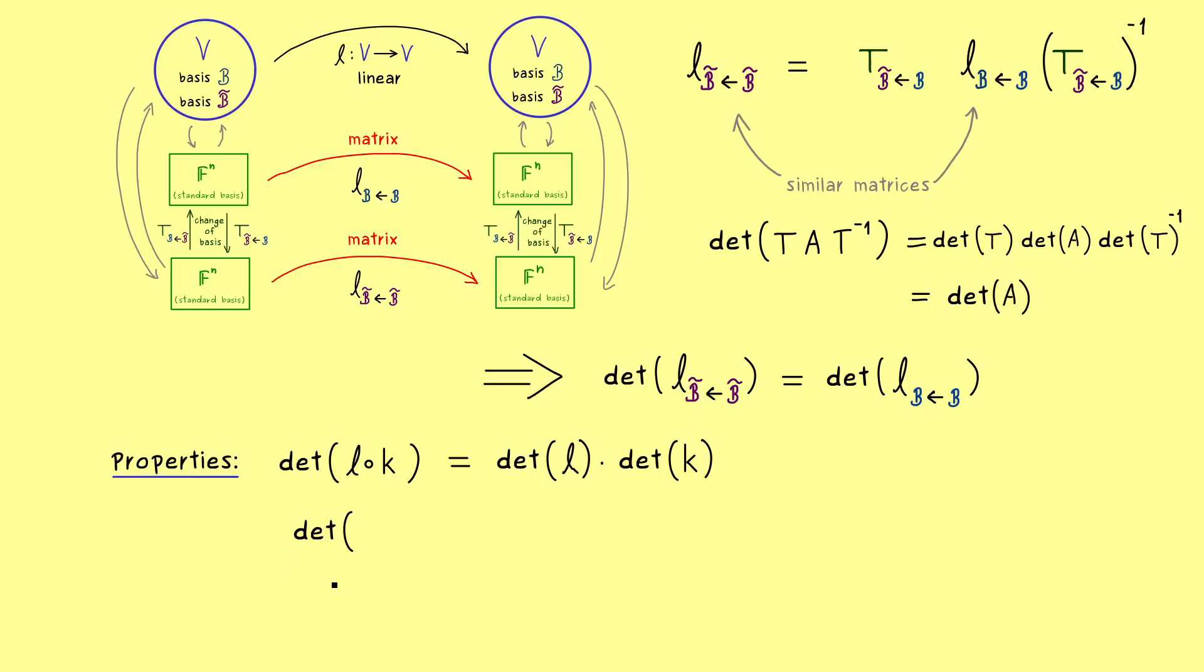And at this point you might think of a very special linear map we can have from V to V. Namely, we can choose the identity map. And since this one is always represented by the identity matrix, we get one for the determinant. So this is important to remember, the determinant function, even in this general case, is fixed with that special value.